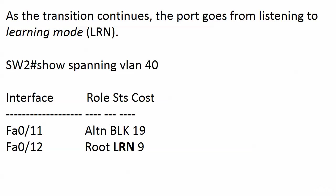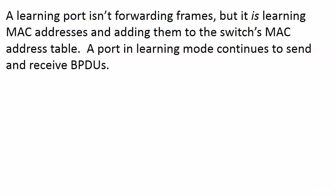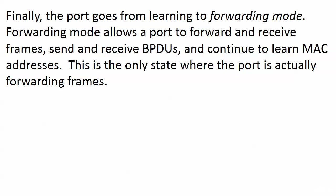As that transition continues, we go from blocking to listening to learning mode — LRN — exactly how you'll see it in the output of show spanning VLAN. A learning port is not yet forwarding frames, but it is learning MAC addresses dynamically and adding them to the switch's MAC address table. A port in learning mode continues to send and receive BPDUs. Finally, when all goes well, the port goes from learning to forwarding mode, which allows it to forward and receive frames, send and receive BPDUs, and continue to learn MAC addresses. The only state where the port is actually forwarding frames is forwarding mode.